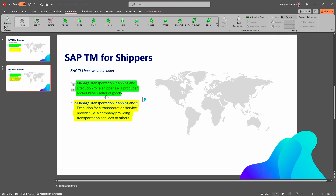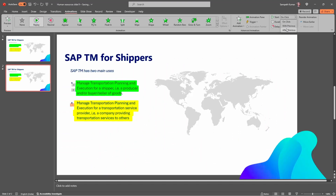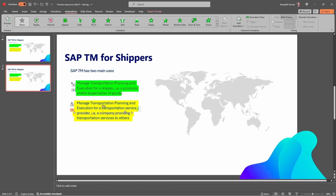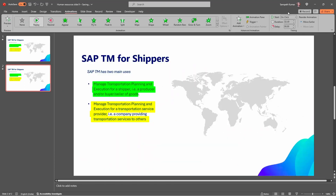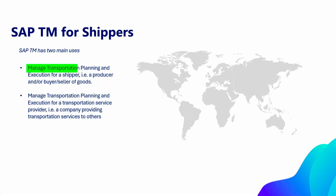For the next one, click Replay, click the down arrow, and select 'After Previous.' Repeat the same for the ones below. Now click on the Slideshow option, and we can observe that the text highlighter animation is functioning.